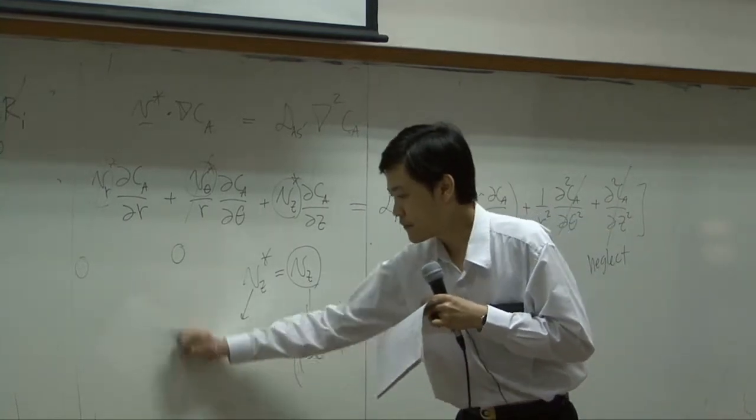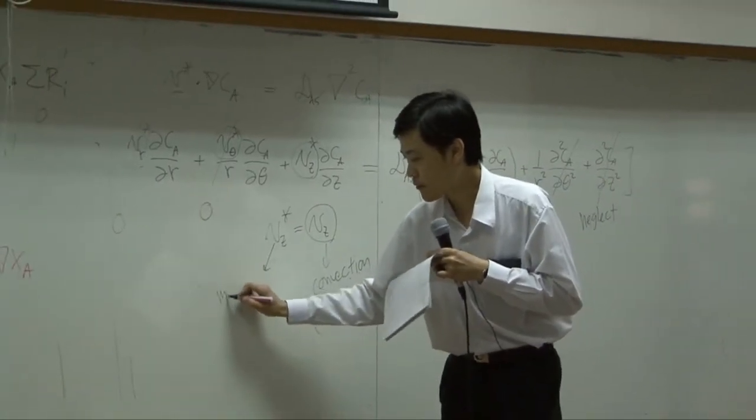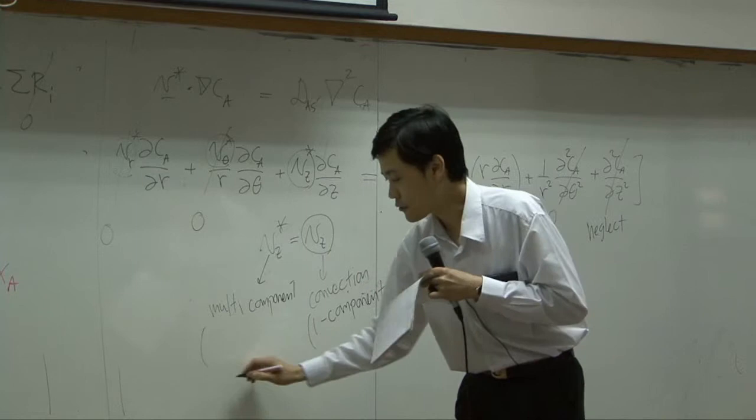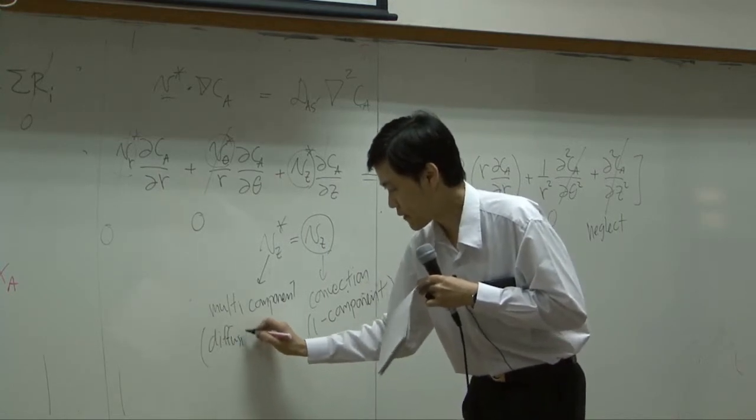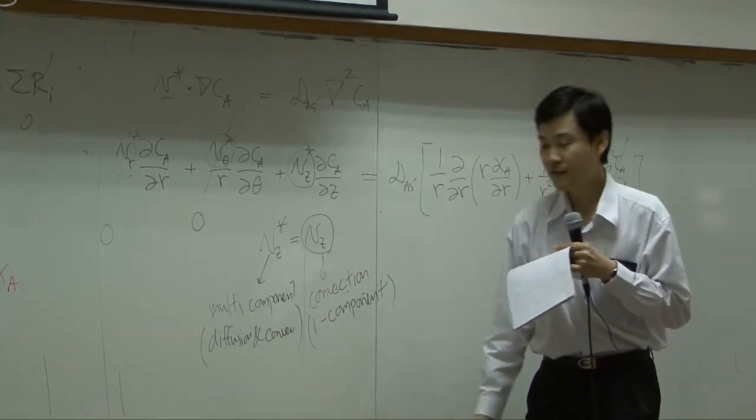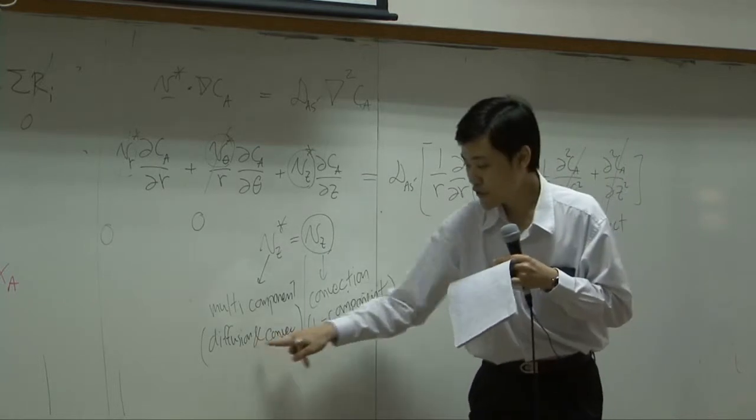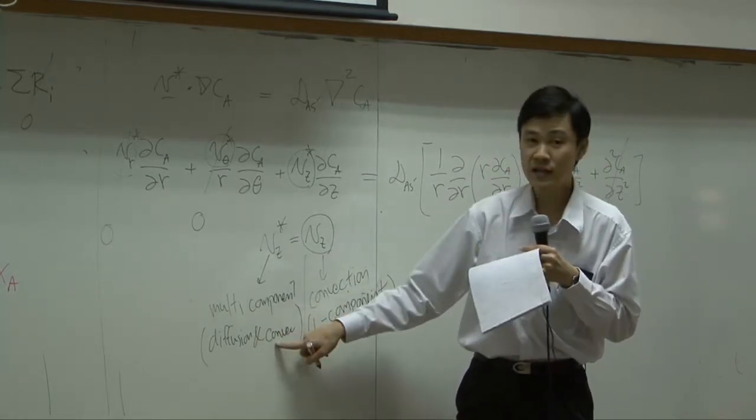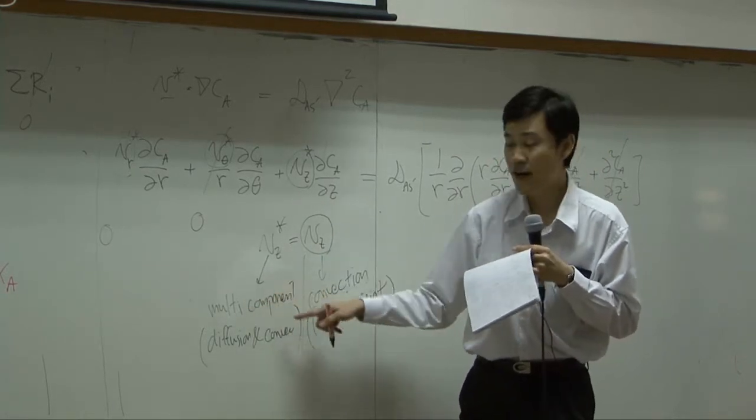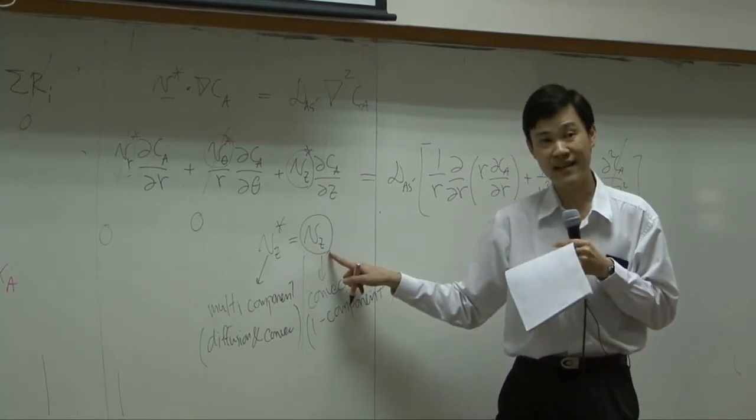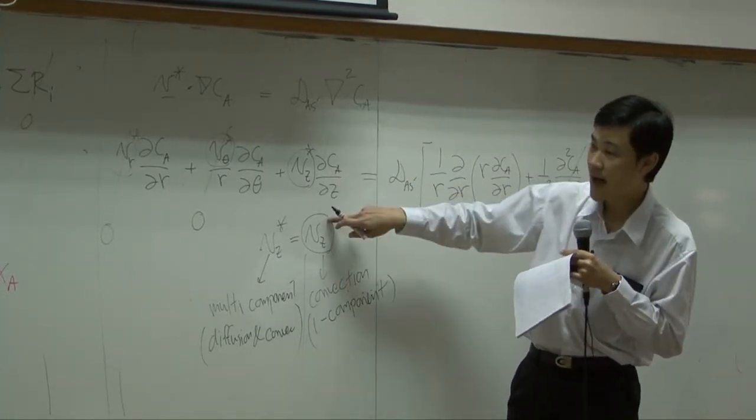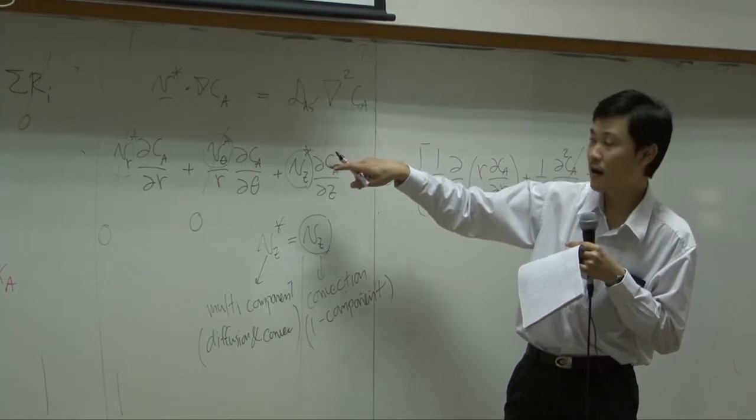Here you have three components or multi-component, and you treat diffusion and convection. If you compare diffusion and convection in z-direction, convection is dominating. No matter how many species you have, as long as convection is dominating, these two are approximately the same. So then you can plug V_max times (1 minus R over R squared) here.